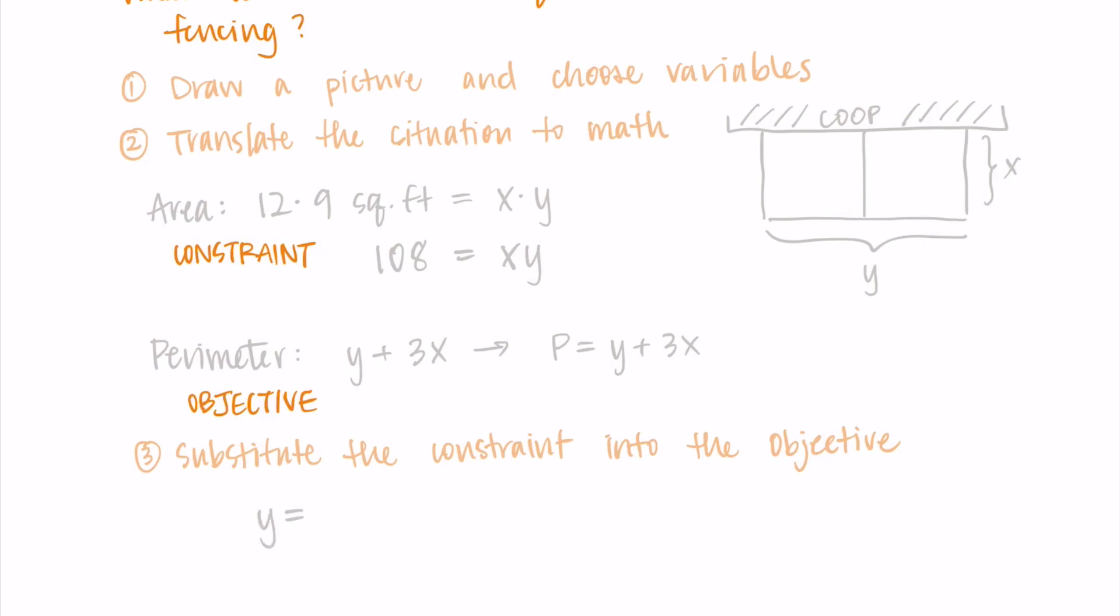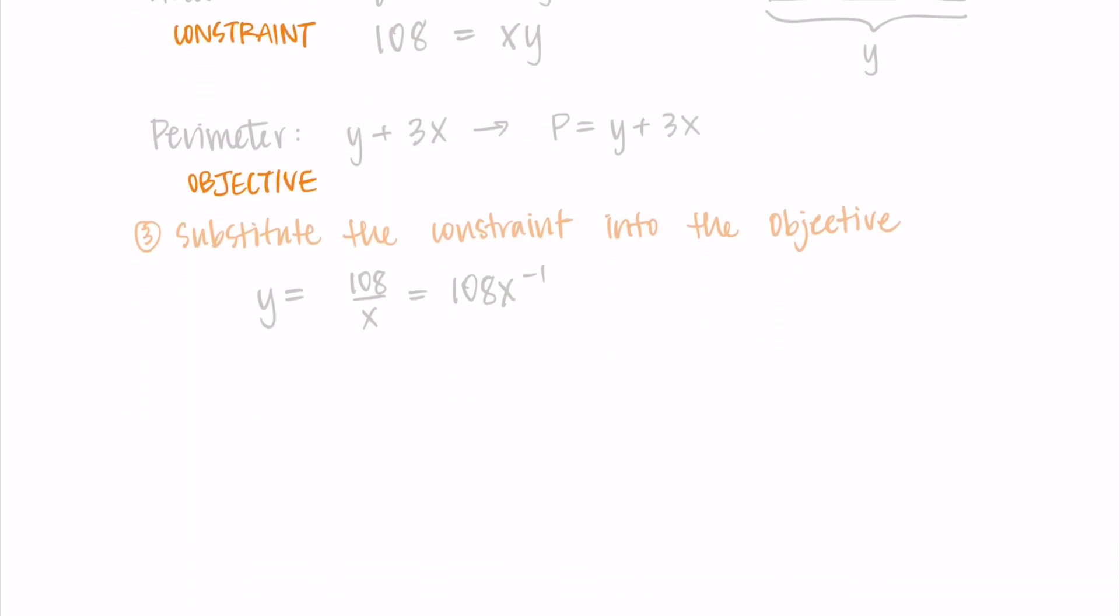I'm going to solve the constraint for Y. You could solve it for X if you wanted. I just like to solve for Y, especially since Y is just on its own here, whereas the three X has a three attached to it. So I divide and I get Y equals 108 over X. And I'll just go ahead and rewrite it as 108 X to the negative one, since I know I'm going to need its derivative at some point. Then I substitute this in to my perimeter, my objective equation for Y. So I have that P equals 108 X to the negative one plus three X.